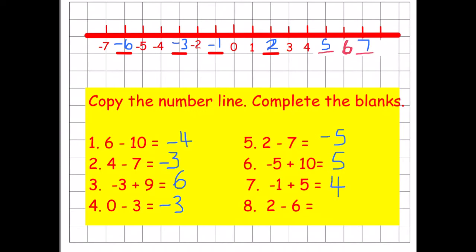Our last question — let's see if you got eight out of eight. We're on two and we're taking away six. Taking away two puts us on zero, and we still need to take away four more, which moves us down to negative four.